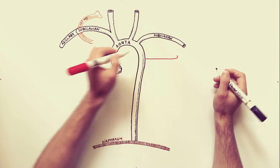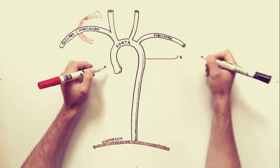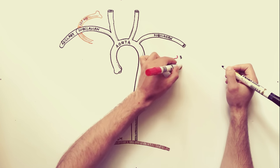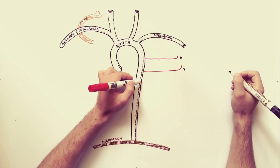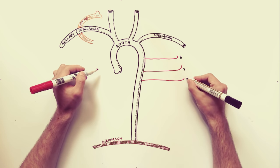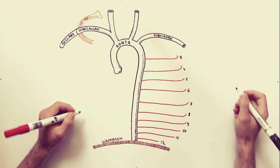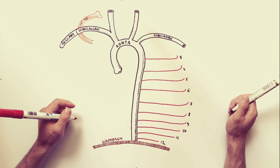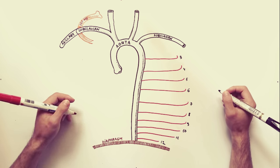We will start with the branches from the aorta, more precisely the descending thoracic aorta. Directly from the descending thoracic aorta are arising the posterior intercostal arteries from the one numbered 3 to the one numbered 12.